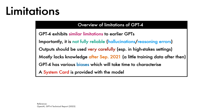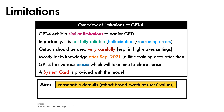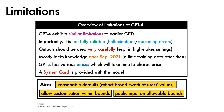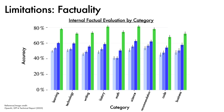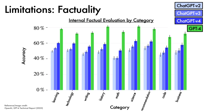An extensive system card is provided with the model as part of the technical report. On the particular point of biases, the authors aim to have the model exhibit a reasonable set of default behaviours that reflect a broad swath of users' values, to allow customisation within bounds, and to get public input on what those allowable bounds should be. To probe these limitations, the authors conduct a factual evaluation along various categories. The x-axis depicts the categories considered and the y-axis denotes model accuracy. Relative to ChatGPT v2, ChatGPT v3, and ChatGPT v4, GPT-4 represents a substantial improvement in factual accuracy, improving 19 percentage points on average.